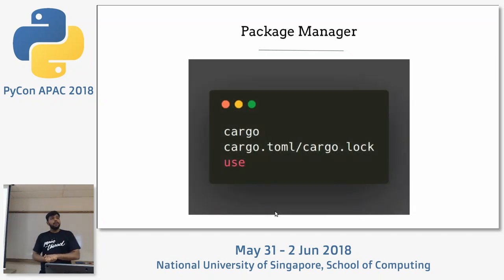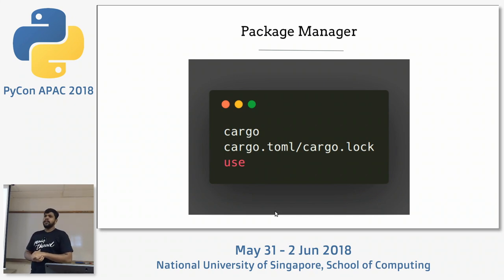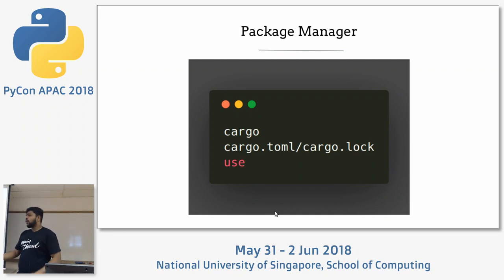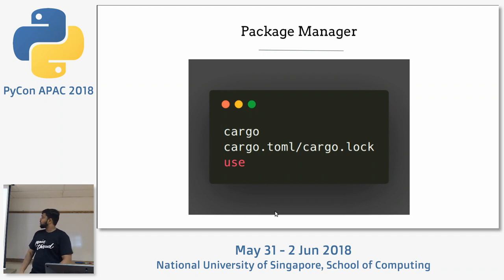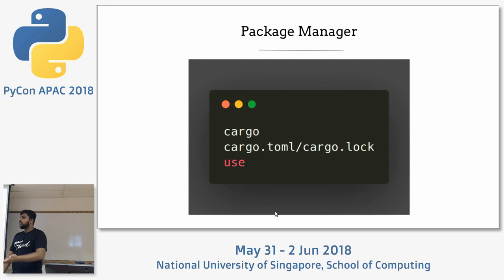One beautiful thing I really like about Rust is the Cargo package manager. Cargo is very similar to pip but does more than pip. You have a configuration management and lock files for it — Cargo works similarly. You could do testing, benchmarking, ship your projects, and put it into your CI/CD pipelines using Cargo.